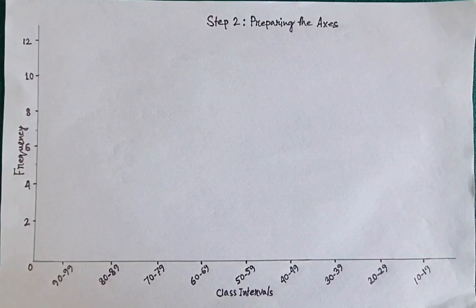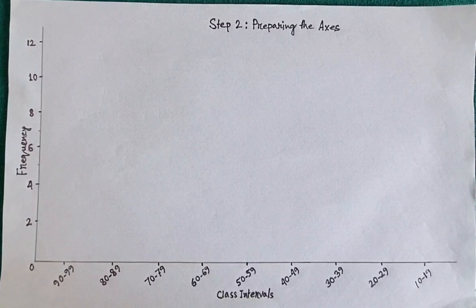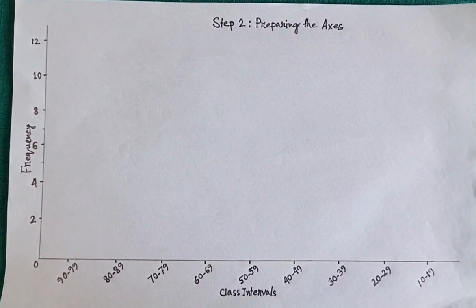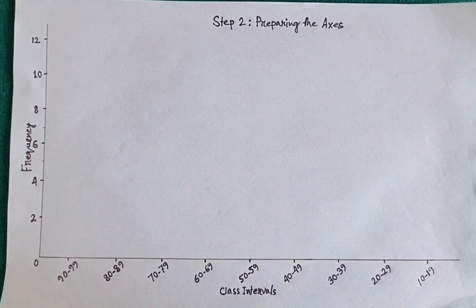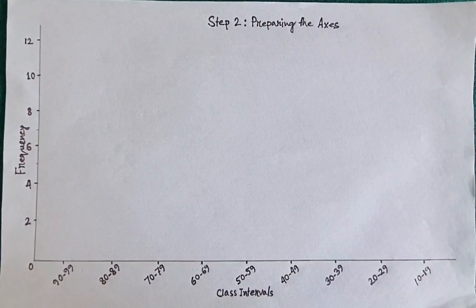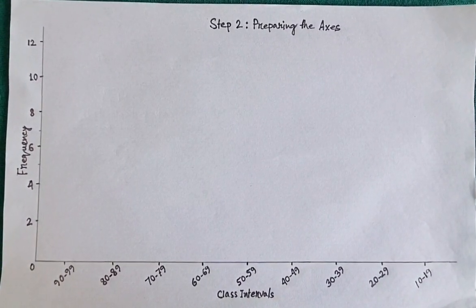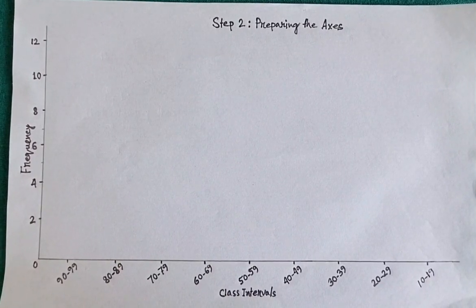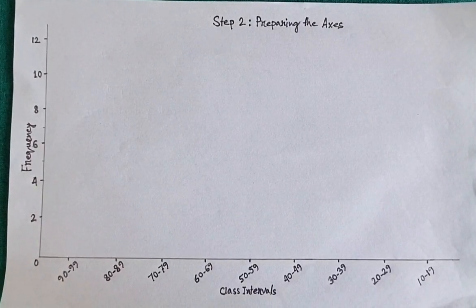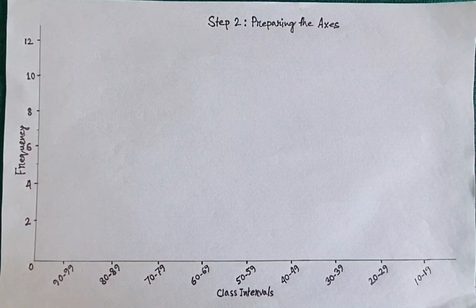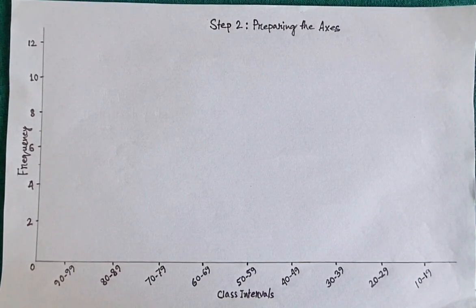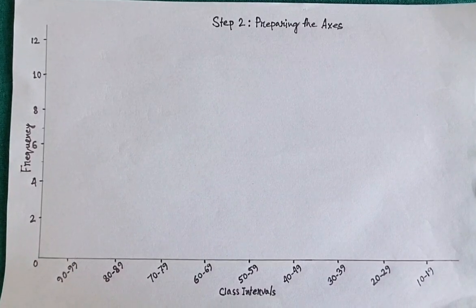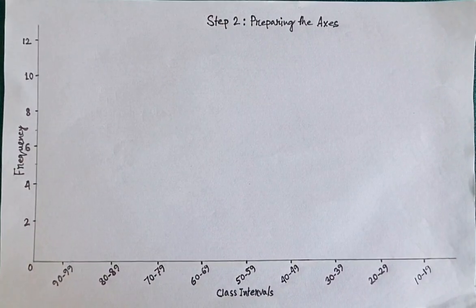Step 2: Preparing the axes. Next, we prepare the axes. The horizontal axis will represent the class intervals, starting from 90 to 99 on the left and ending with 10 to 19 on the right. The vertical axis will represent the frequencies, starting from 0 and going up to 12. Let's label them properly — class intervals on the horizontal axis and frequency on the vertical axis. Make sure to leave enough space for labeling the intervals and plotting the bars.